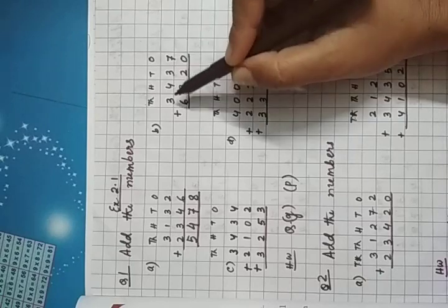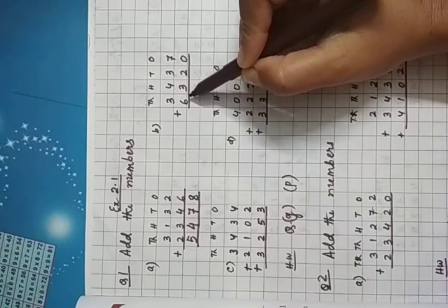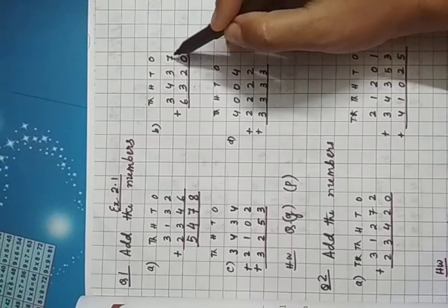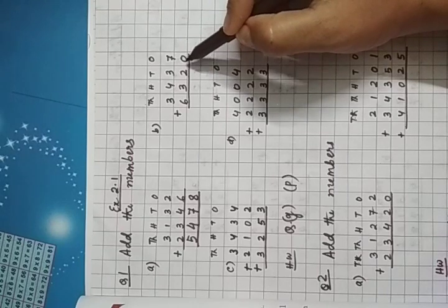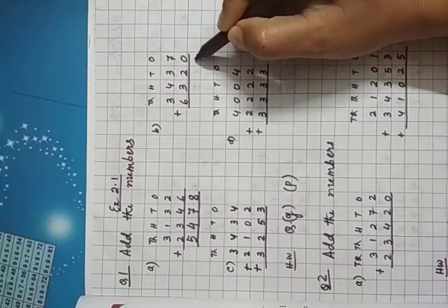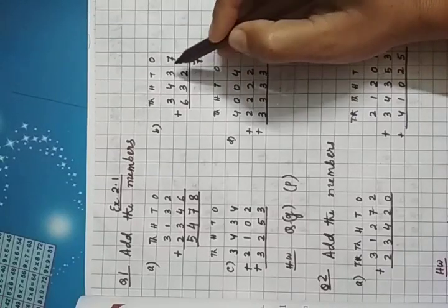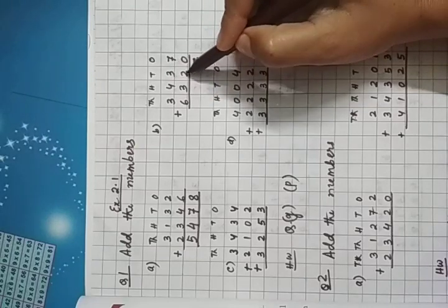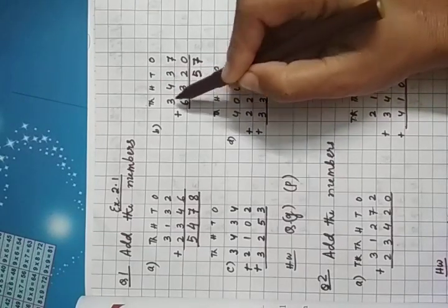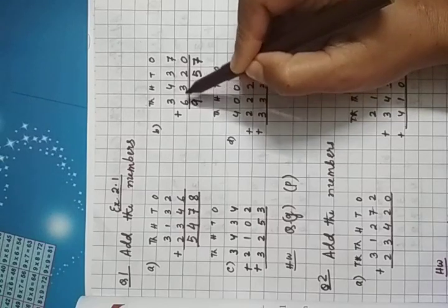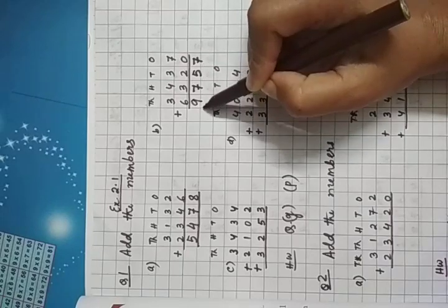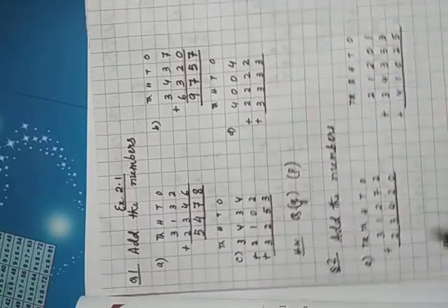Now come to the next question. 3437 plus 6320. Here in the 1s place, which number you are getting? 7 and 0. When you add 0 to any number, we get the number itself. Same number. There will be no changes. So 7 plus 0 will be 7 here. 3 plus 2 in the 10s place. 3 10s plus 2 10s. 3 plus 2, 5. Then 4 plus 3, 7. And 3 plus 6, 9. So 9757. I hope you are understanding.